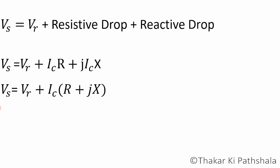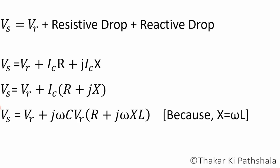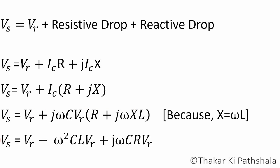Now putting in the value of capacitive current and inductive reactance, we get: Vs = Vr + jωCVr(R + jωL). If we multiply the terms in the bracket, we get the value of sending end voltage as: Vs = Vr − ω²LCVr + jωCVrR.